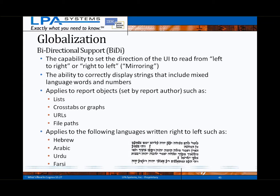The bi-di option is set by the report author within Report Studio for individual lists, cross tabs, charts, URLs, and file paths. Currently, only report content can use this capability, not the Cognos Connection or associated product UI in Studios.